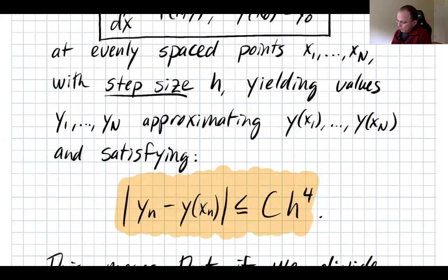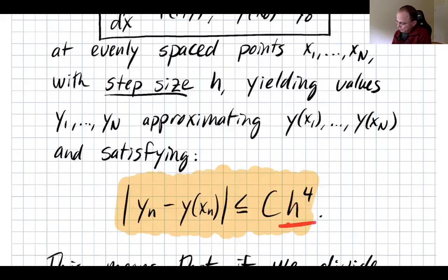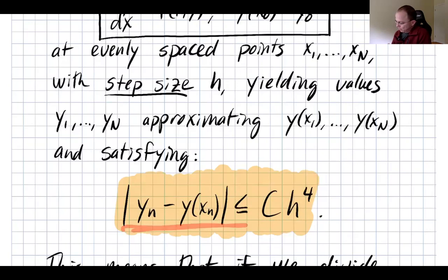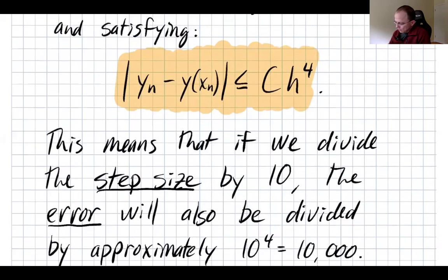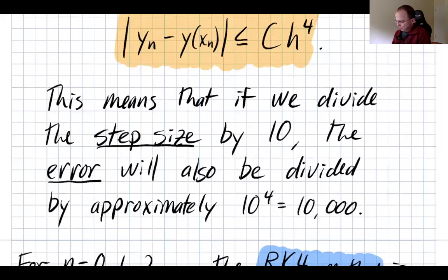What's great about the Runge-Kutta method, RK4, is that it is an order 4 method. So when we divide h by 10, the error bound will be divided by 10,000, giving us a much smaller error. So dividing the step size by 10 means the error will be divided by 10 to the fourth, or 10,000.